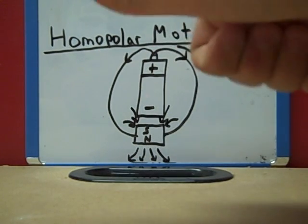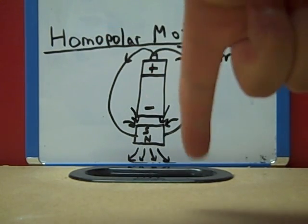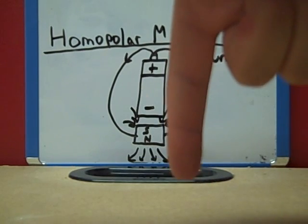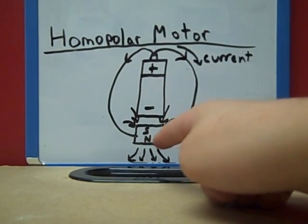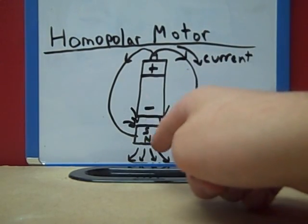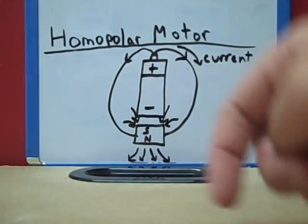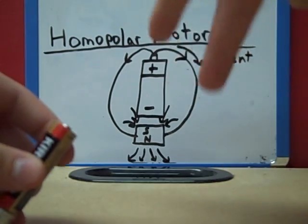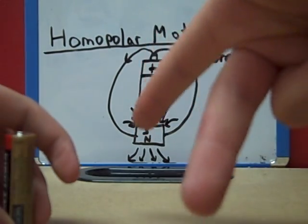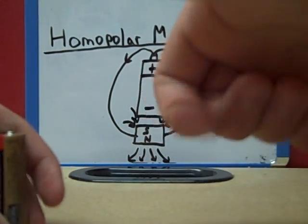Your pointer finger represents the direction of the magnetic field, and in this, the magnetic field is going around, north to south. And your middle finger represents the direction of force.